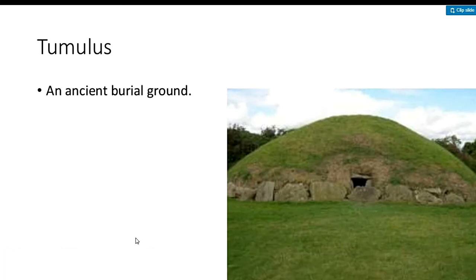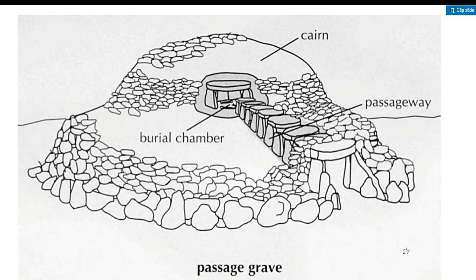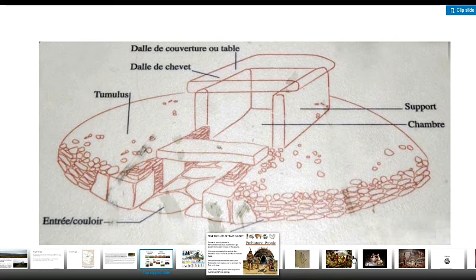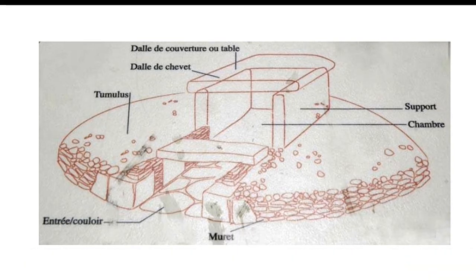The dolmen consists of large stones set on end with a large covering slab on top — this is what is called the post and lintel method of construction. Another ancient structure is the tumulus, or passage grave, which is an ancient burial mound. It has a passage leading inside, as seen in its side and top sections.